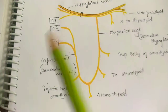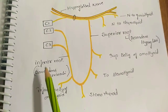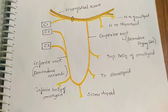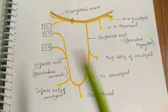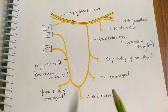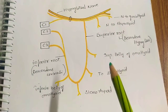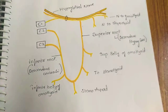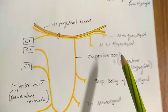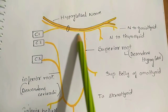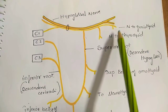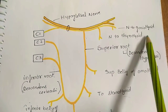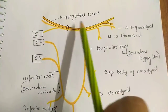It supplies all the infrahyoid muscles — that is, the muscles lying below the hyoid — except the thyrohyoid. The thyrohyoid muscle is supplied by the nerve to thyrohyoid, which comes from the hypoglossal nerve.